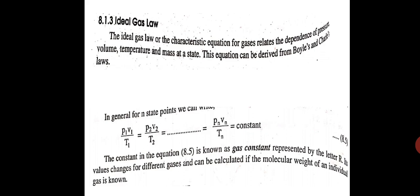Based on these two laws, we will come to the ideal gas law. The ideal gas law or the characteristic equation for gases relates the dependence of pressure, volume, temperature, and mass of a state. This equation can be derived from Boyle's and Charles' law. So we can say P1V1 by T1 equals P2V2 by T2, or continuing we can say PnVn divided by Tn, and that is constant.